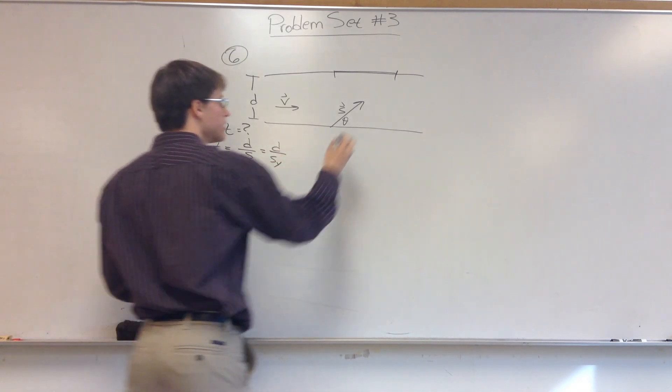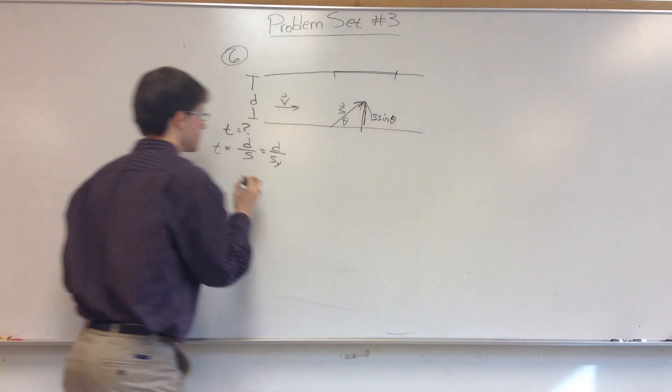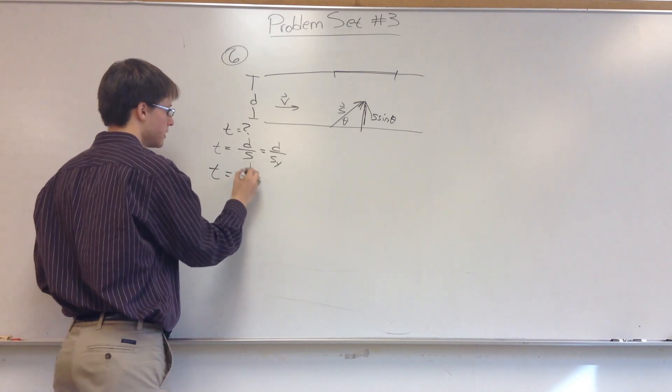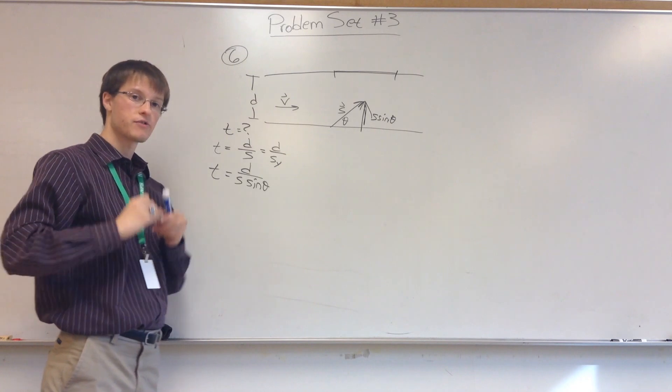So SY, that's going to be here, that's going to be S sine theta. Which means that the amount of time it takes him to cross the river is equal to D divided by S times the sine of theta. And that's your answer for part one.